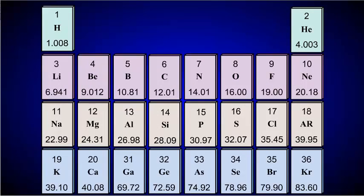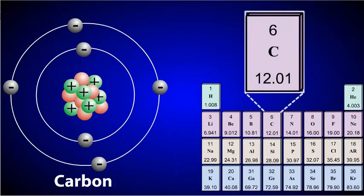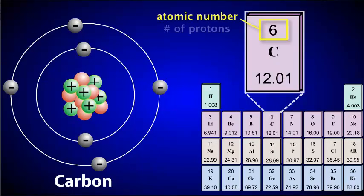You can learn a lot about the physical properties of an element by reviewing the periodic table. Let's take a look at carbon as an example. The number that appears above the element symbol is called the atomic number. The atomic number tells you the number of protons that are in the nucleus of that atom. So in the case of carbon, you can see that it has six protons in its nucleus.